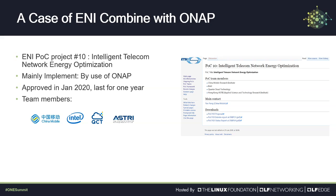We introduce a case of AI combined with OLAP, which is the AI-PEG-10. AI-PEG-10 is mainly implemented by using OLAP, approved in January 2021, lasting for one year. The team members include China Mobile, Intel, QuantCloud, and S3.